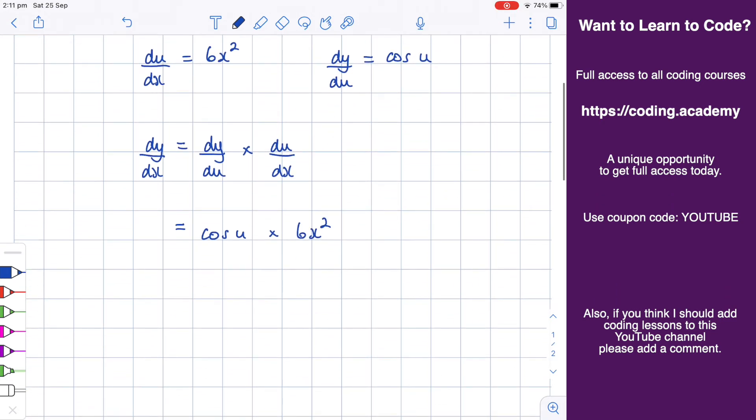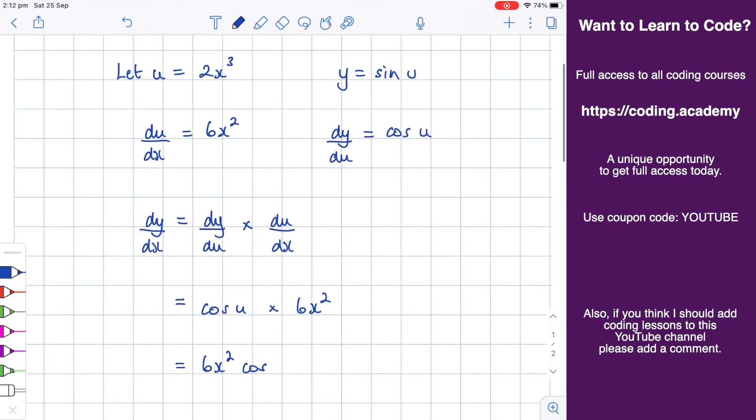Now what I'll do is just tidy things up a bit, move things around. So I'll put 6x squared multiplied by cosine of u. Well, u is actually 2x cubed. And that is the final answer.